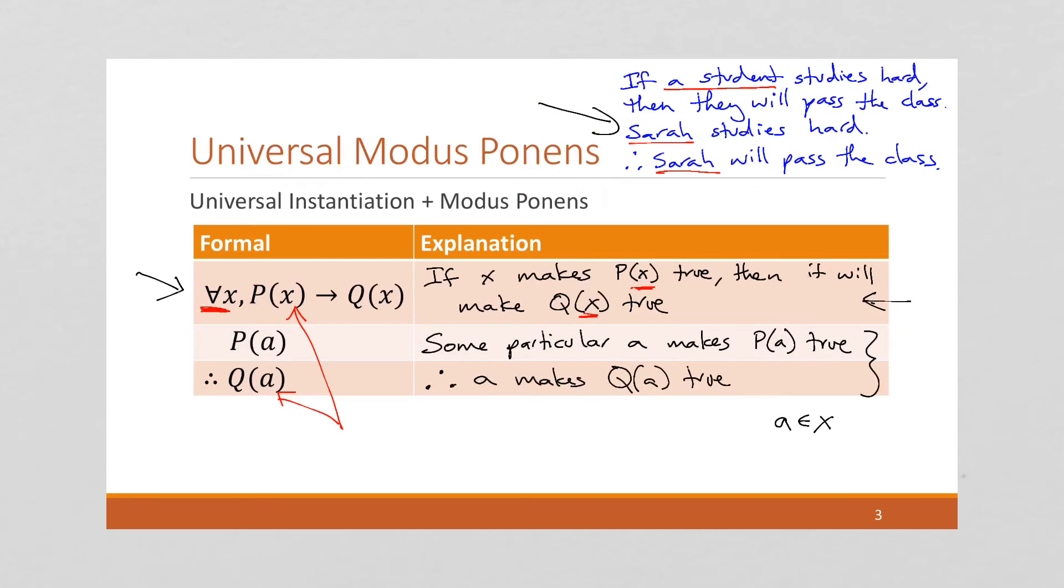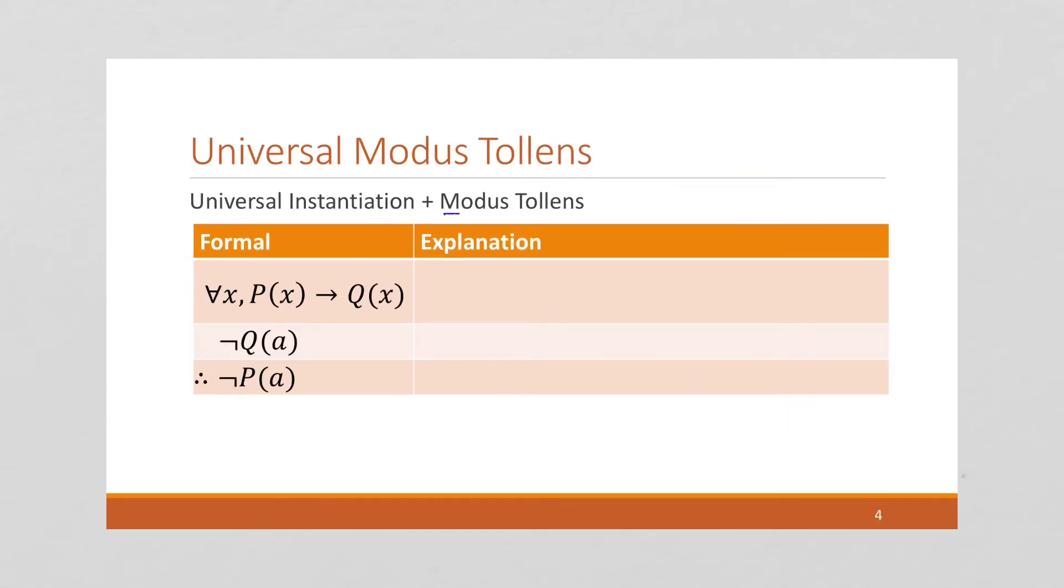So, notice how here, this is the same as modus ponens. Modus ponens usually says P implies Q. We're given P, therefore Q. That's really what we're doing here. Except now we're using these capital letters because it's like a set or function instead of just a single statement like it was down below. We can do modus ponens this way. And we can do modus tollens this way.